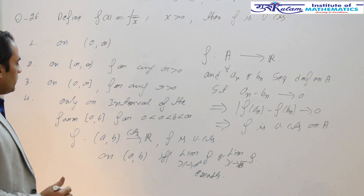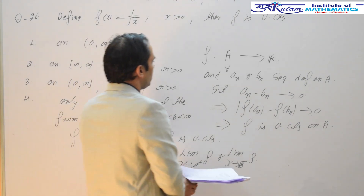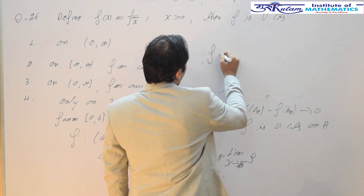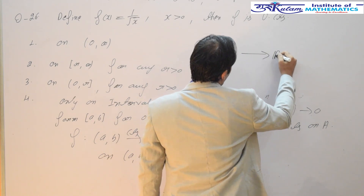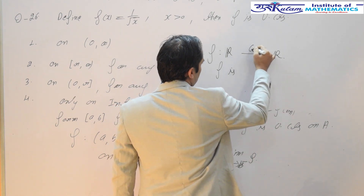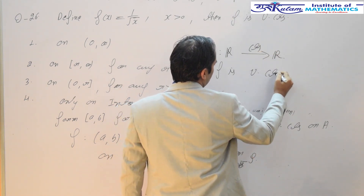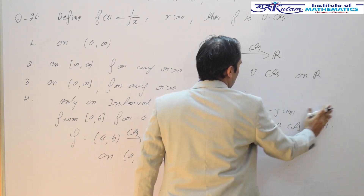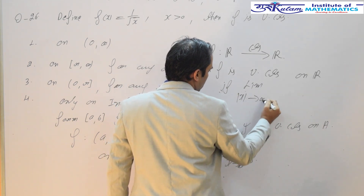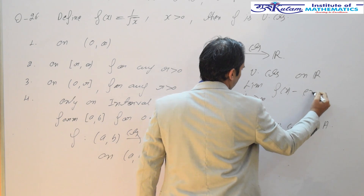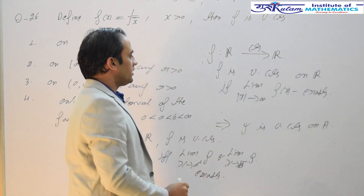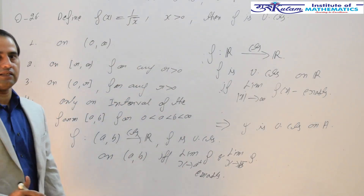Similarly, if a function is defined from ℝ to ℝ and is continuous, then f is uniformly continuous on ℝ if the limit of f(x) as |x| tends to infinity exists. This condition is only a sufficient condition, whereas the last two conditions are necessary as well as sufficient.